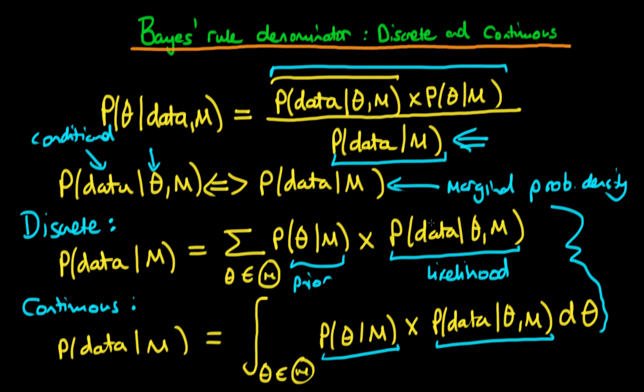And we need to think about all the different ways that we could have got that data given our choice of model. So we need to think about all the potential values of theta that could result in that particular data being generated. But then we need to weight each of those particular likelihoods of the data being generated from that model and that particular theta choice by our prior weight which we ascribe to the likelihood of actually having that value of theta before we actually do the experiment in the first place.